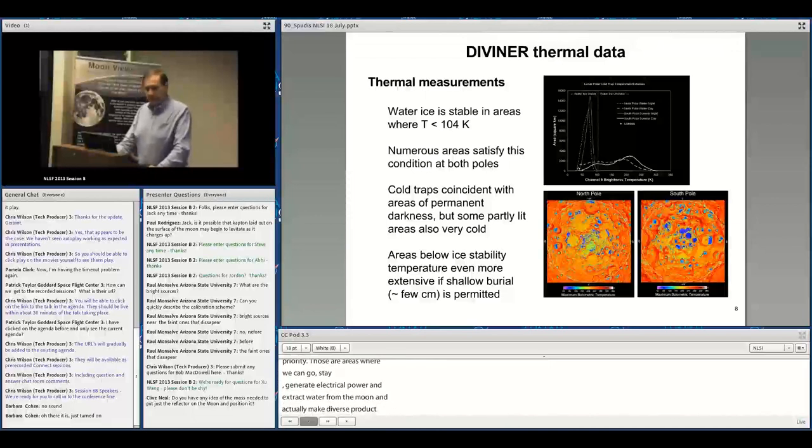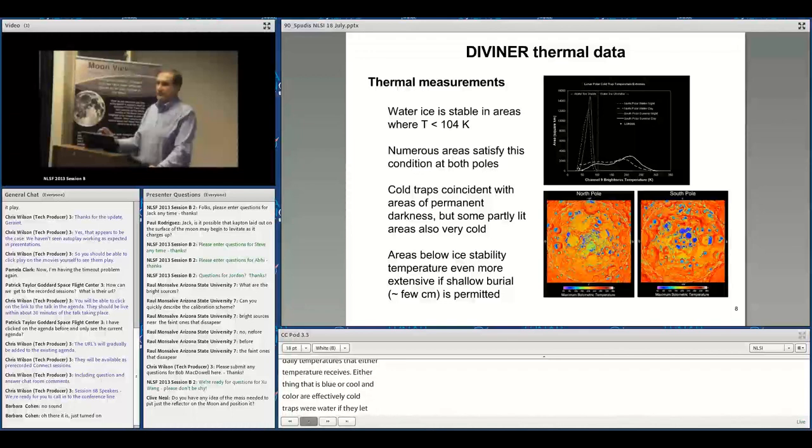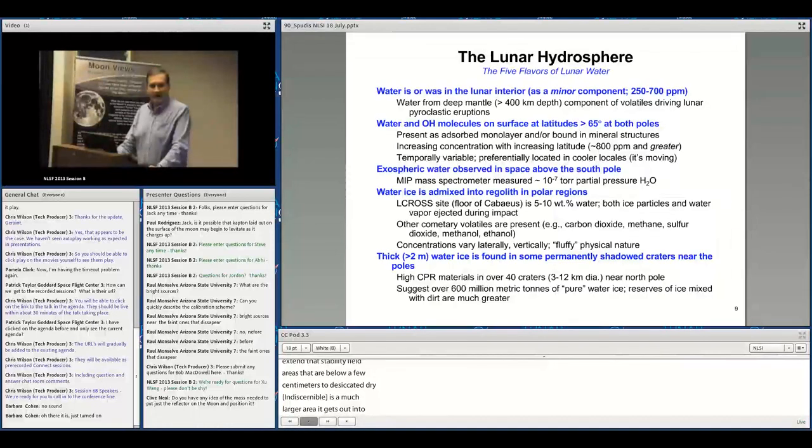LRO carried the Diviner instrument which measured thermal emission spectra and surface temperature. Water ice is stable on the Moon anywhere maximum temperature is less than 104 Kelvin. These maps show maximum daily temperatures at each pole—anything blue or cooler are effectively cold traps where water is stable at the surface. Below a few centimeters of dry regolith, the stability field extends into the yellow areas.